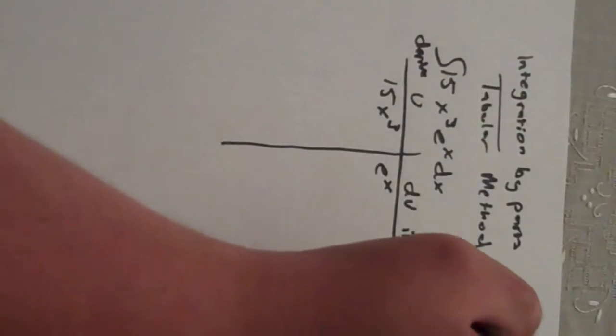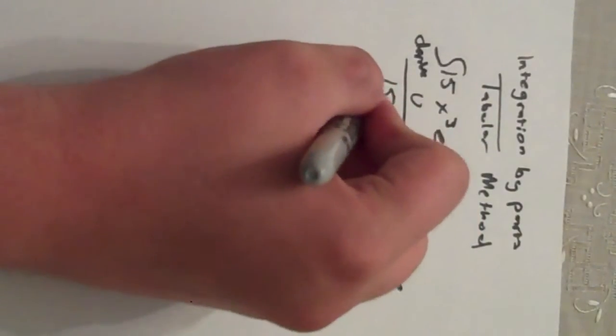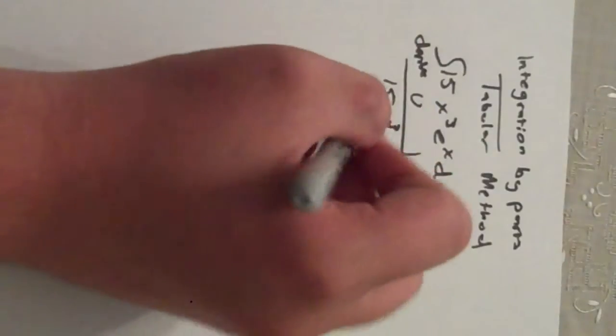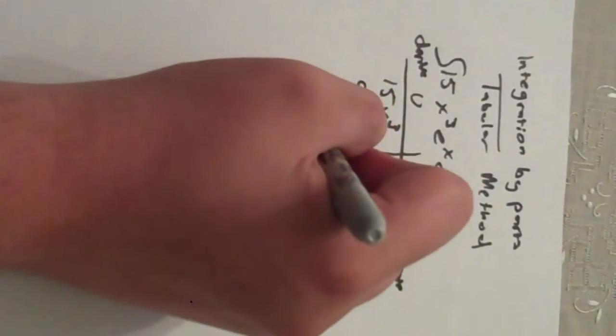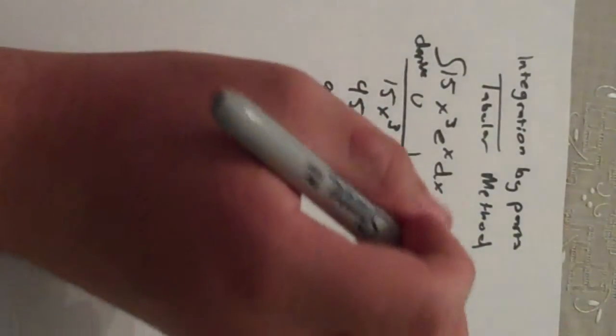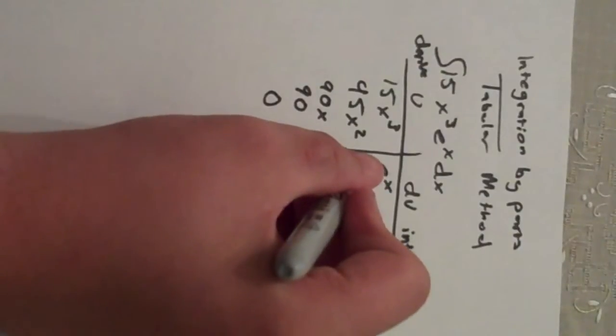And so we're just going to keep deriving this until we hit zero. So 45x squared, 90x, 90 and zero. And then we stop. And then we just keep integrating this side which is just going to keep being e to the x.